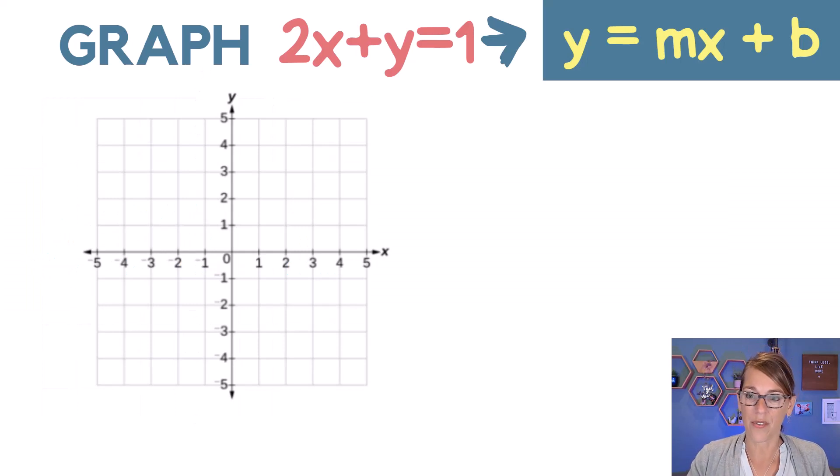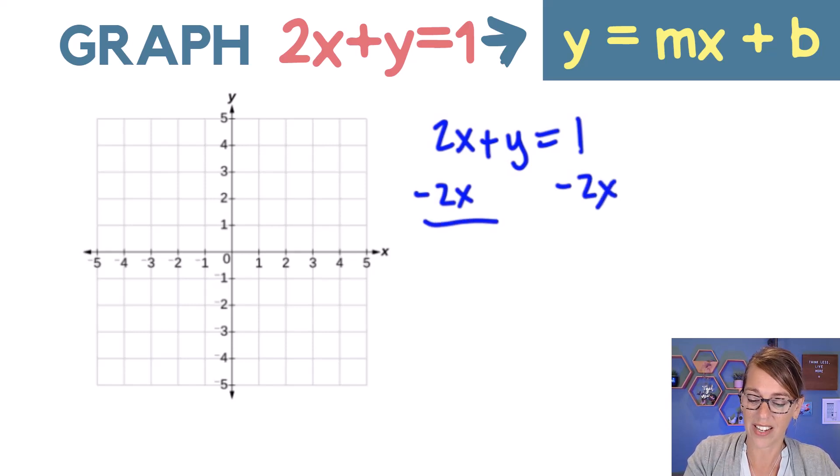What we really want to do here is take this equation and solve it for y. I want y on one side and everybody else on the other. So I've got 2x plus y equals 1. I need to move that 2x over. I'm going to subtract 2x from both sides and I end up with y equals,